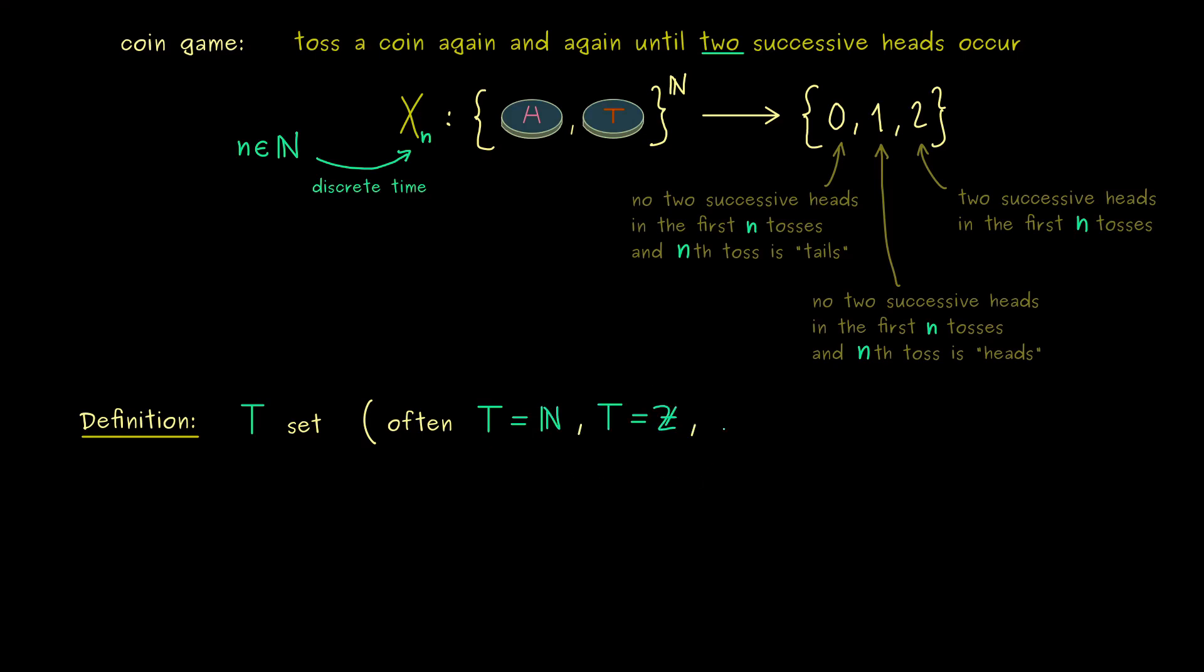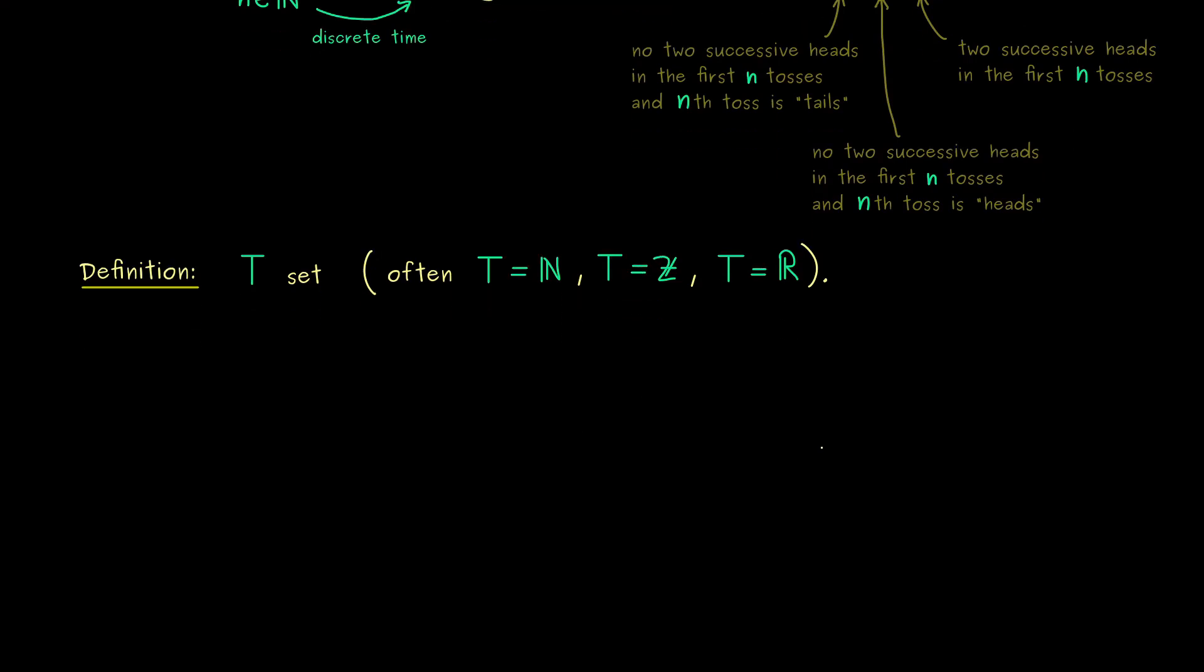Therefore often we have that T is equal to N or Z, which correspond to the discrete time steps. And on the other hand we can also have the continuous case where T is equal to R. And then as seen before what we have to do is to define a random variable with index lowercase t.